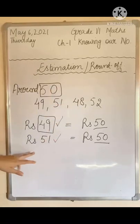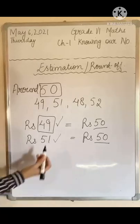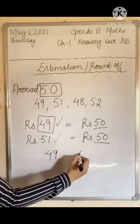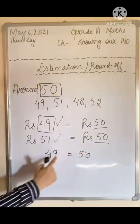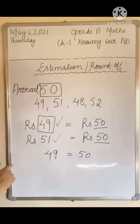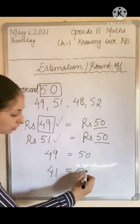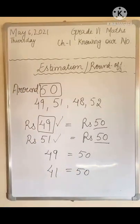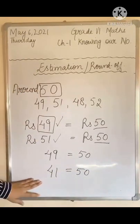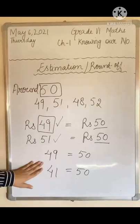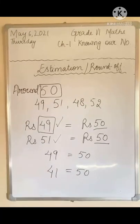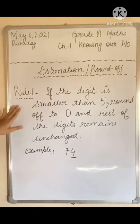So how can we estimate numbers? I have estimated 49 to 50 and 51 to 50. But can I estimate 41 to 50 also or not? Now we are going to learn how we can estimate numbers - the rules for estimations. Let's start with rule number 1 of estimations.